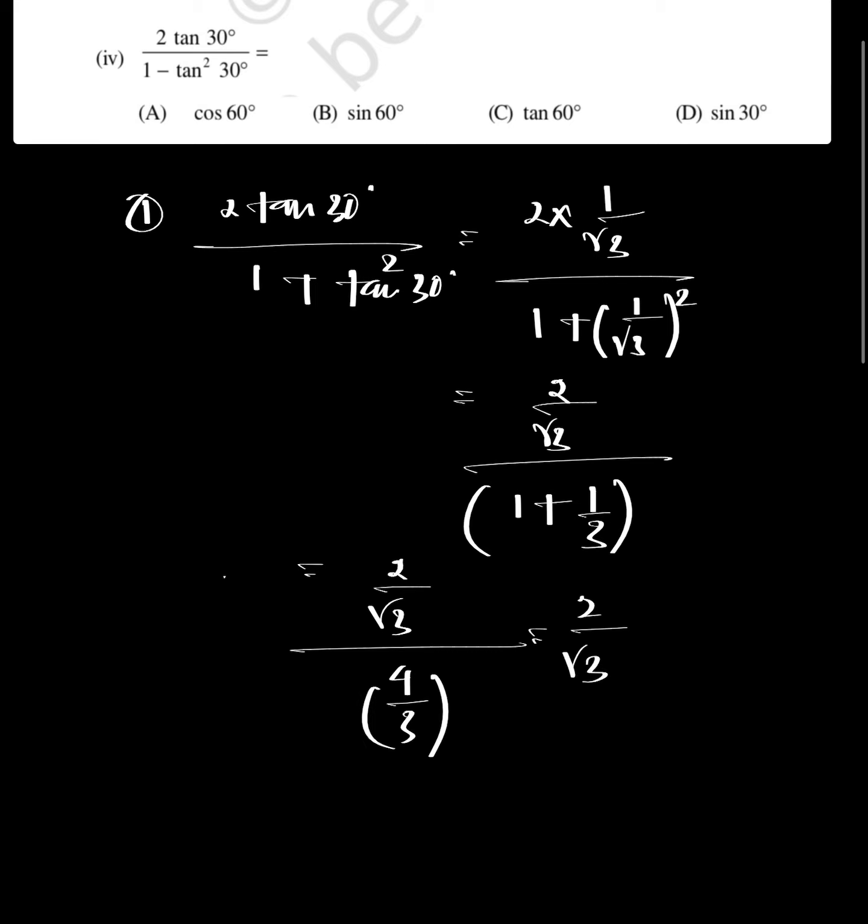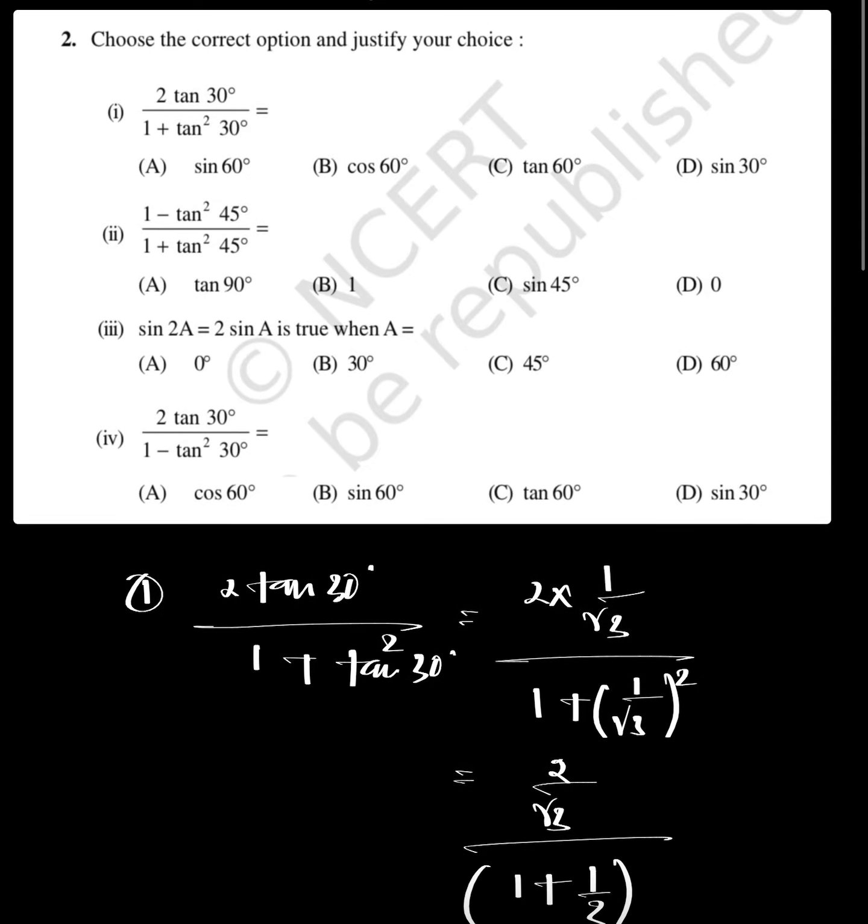Simplifying: 2 by root 3 divided by 4 by 3, which equals 2 by root 3 times 3, giving root 3 by 2. This is the sine 60° value. The answer could also be cos 30°, so the correct options are A and B.